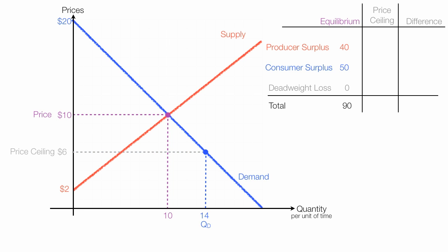The quantity supplied, you just draw over to the supply curve and down again. And this would be 5 units, and that's quantity supplied. Quantity demanded is greater than quantity supplied, which will cause a shortage. More people want it than have it. So at a price ceiling of $6, quantity demand is 14 and quantity supplied is 5. So you have a shortage of 14 minus 5, or 9.